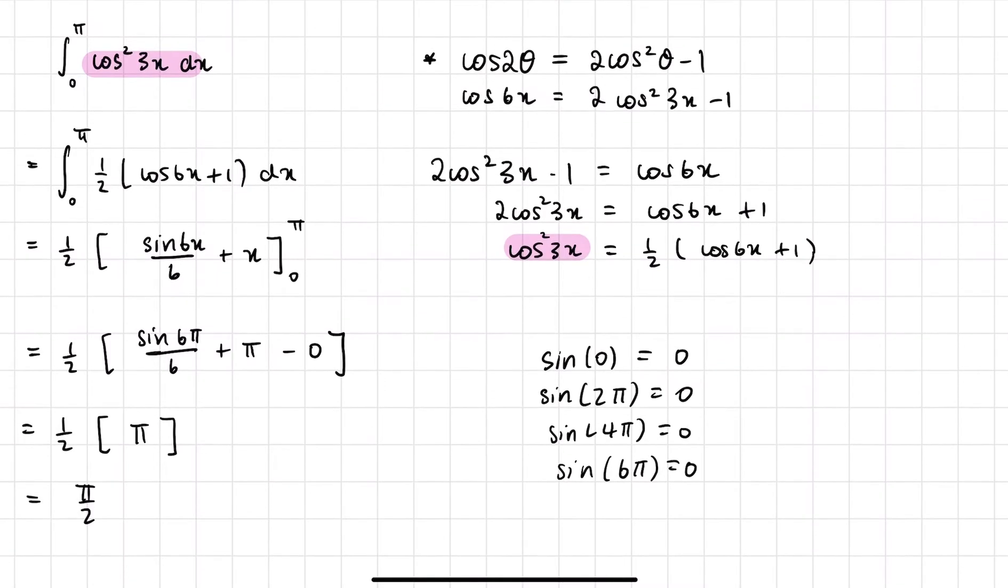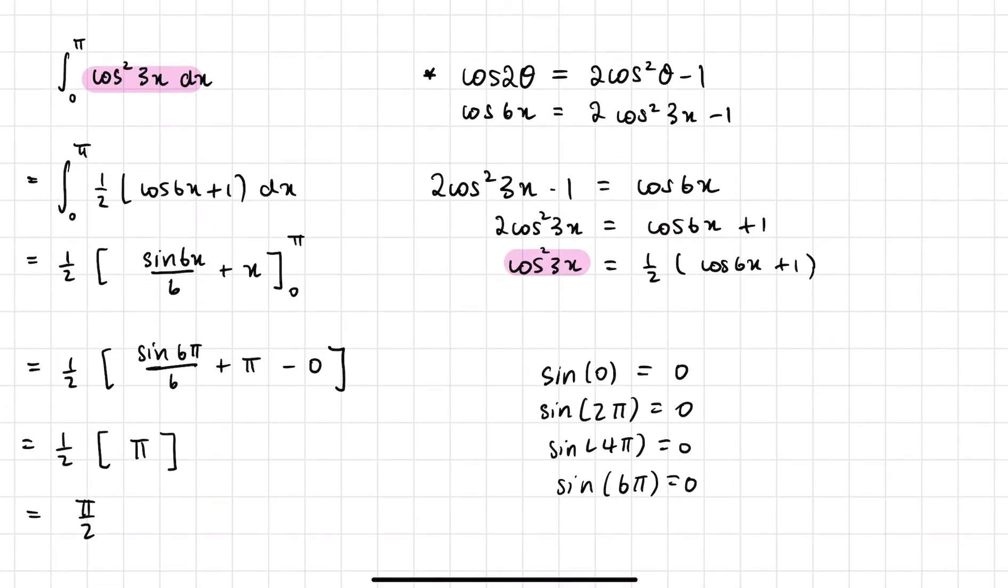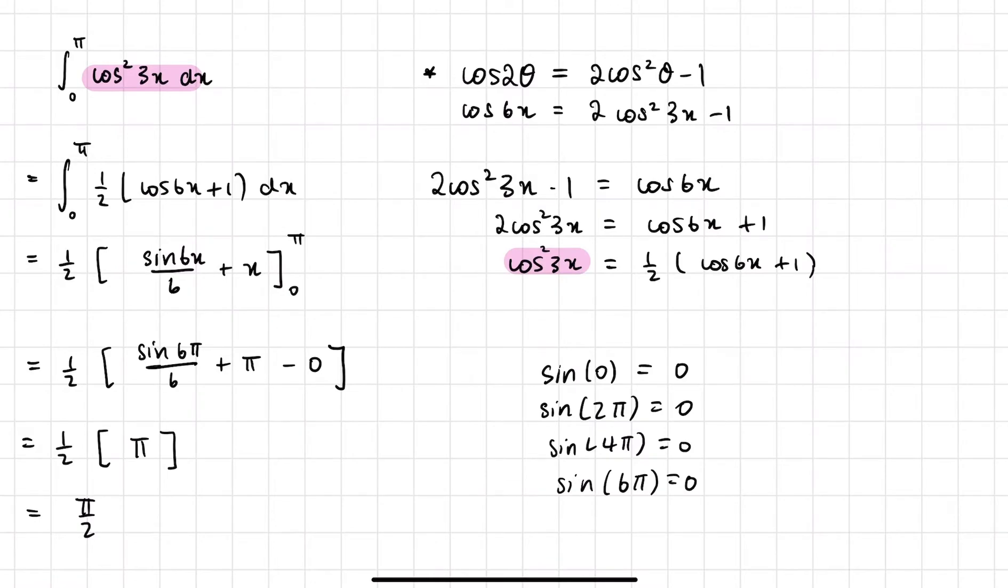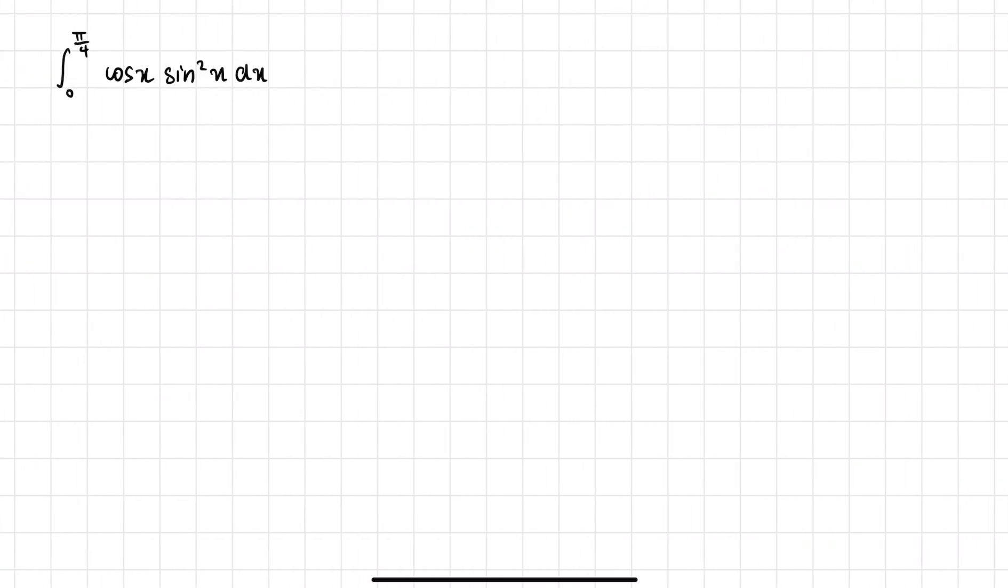And so now we have just π on 2. Alright, so that's just the answer for this trig question. Now this is kind of in contrast to this next question I'm about to show you, which also has a square on it but we're going to have to tackle this in a bit of a different way.